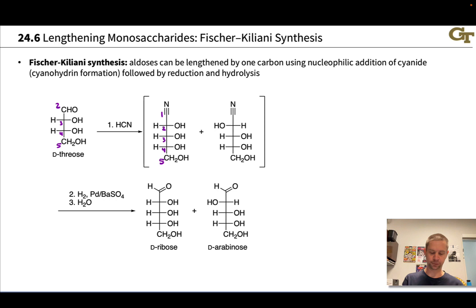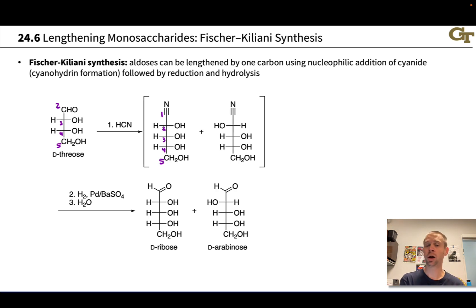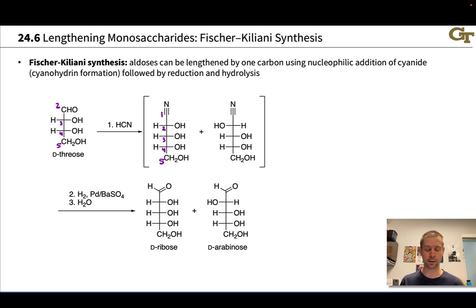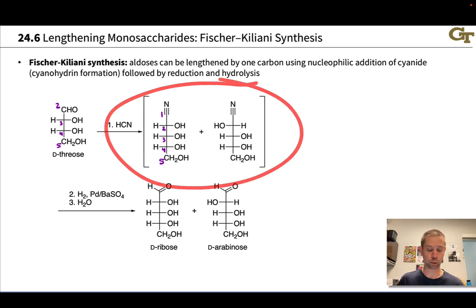This step sets a new stereocenter at carbon two, and that stereocenter could have one of two possible configurations. So this step is going to give a mixture of epimers. For our purposes, you can always assume that the epimers are separable — they're always going to be diastereomers, so at least theoretically we're always able to separate them and carry one or the other on as desired. But this nucleophilic addition step will give a mixture of epimers, and that's worth noting.